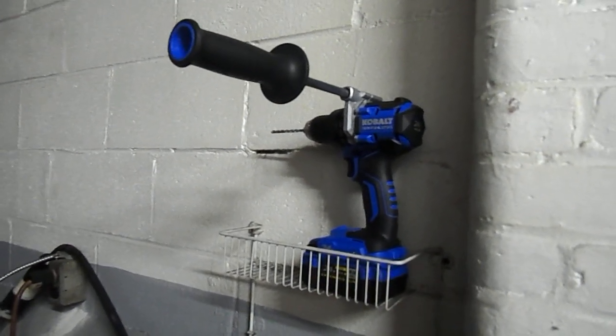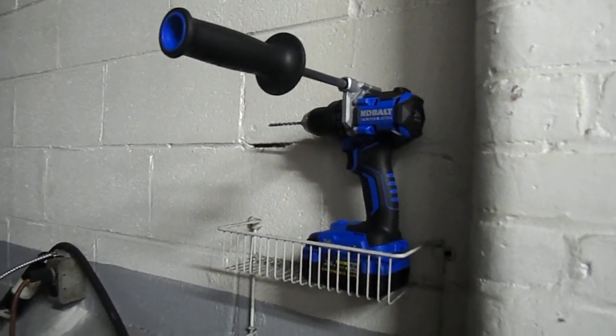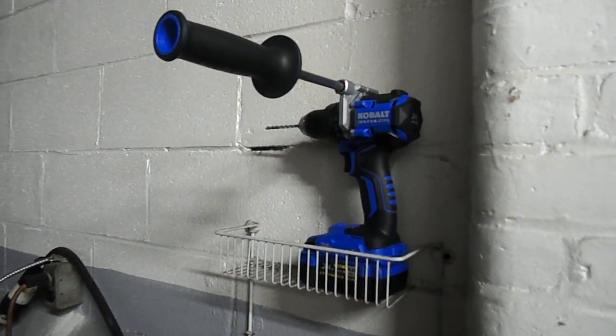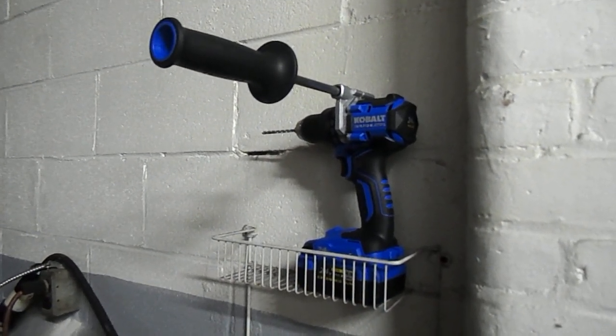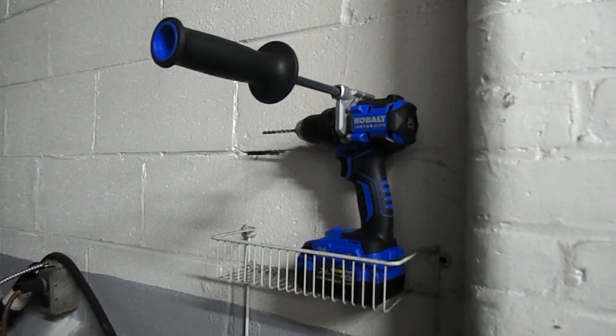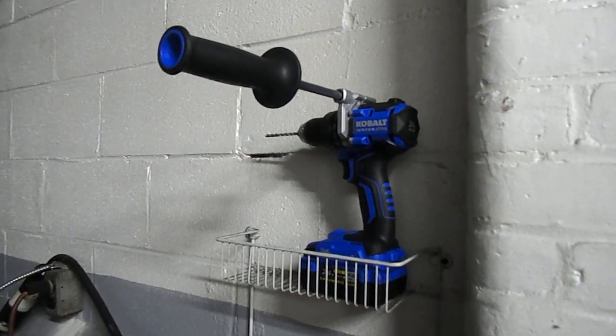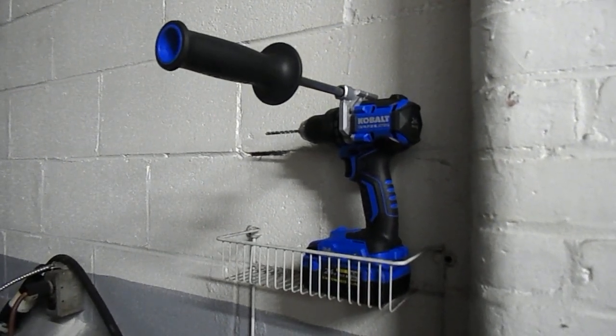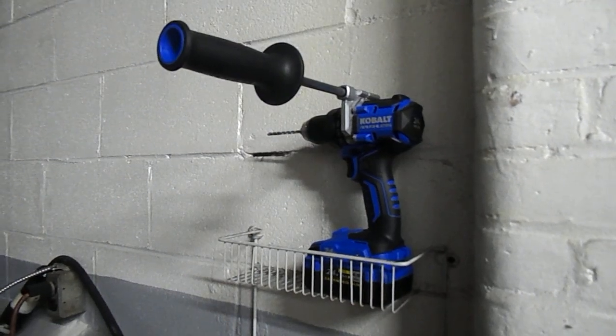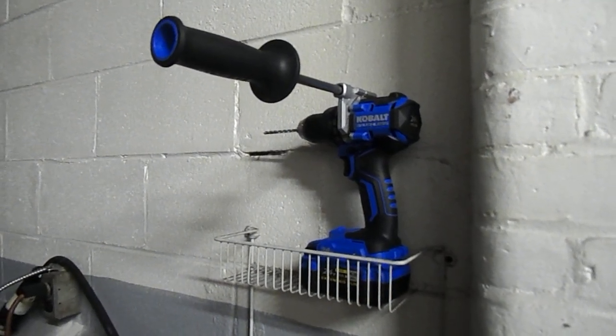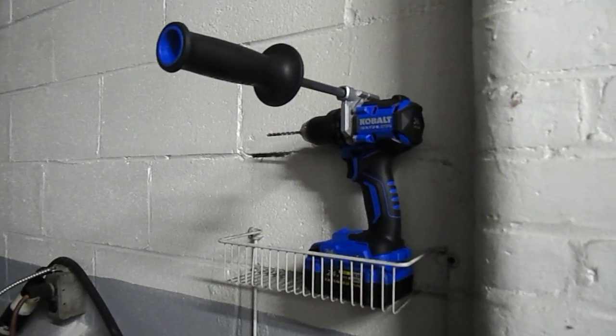The drill we're going to be using is a Vermont American, catalog number 14004. It's a quarter inch, 4 inch long masonry bit with carbide tip and spiral for clean fastening area.